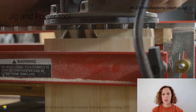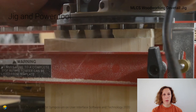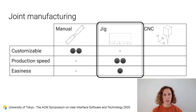Another way to manufacture joints is with a jig — a device that holds and guides a piece of wood while cutting with a power tool. This technique probably has the fastest production speed, but it is hard to customize the joint because you need a different jig for each geometry you want to make.